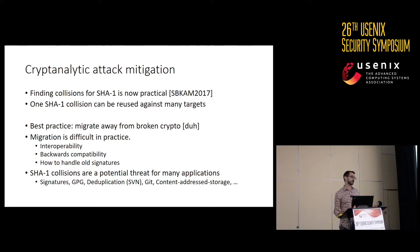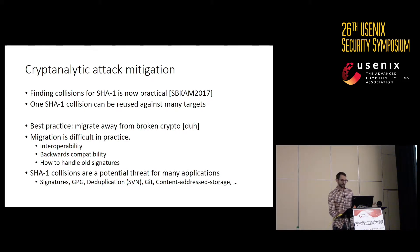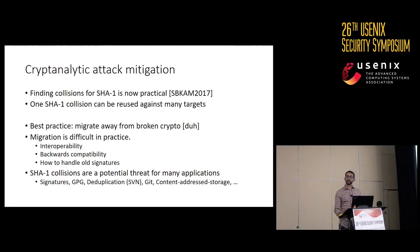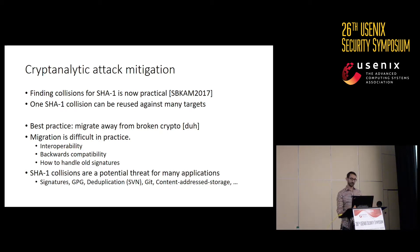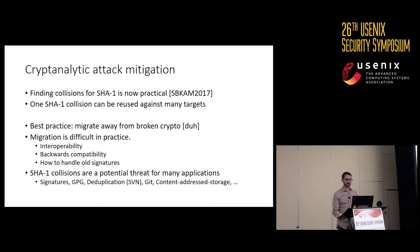SHA-1 collisions are potential threats for many different applications. As I just mentioned, signatures — there are now GPG message forgeries. SVN deduplication actually uses SHA-1, so that's vulnerable to collision attacks. Git extensively uses SHA-1, and though it's not vulnerable to the shattered PDF, it is generally vulnerable to SHA-1 collision attacks.